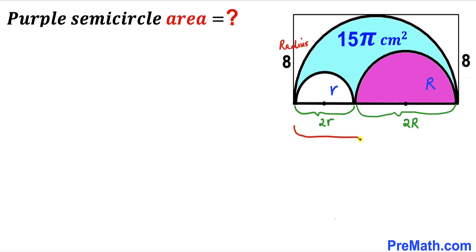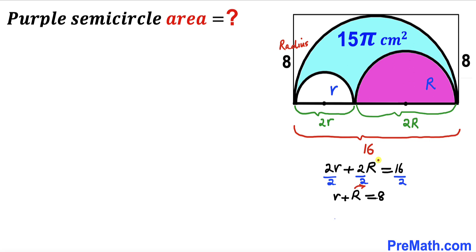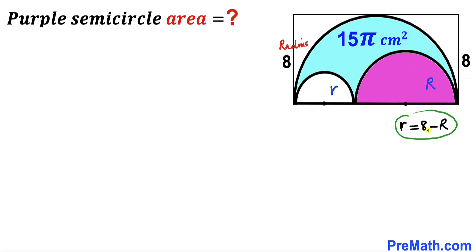This is the diameter of the large semicircle, so that is 2 times 8 = 16 cm. Therefore, 2r + 2R = 16. Dividing each term by 2, and moving uppercase R to the right-hand side, we get lowercase r = 8 − R.